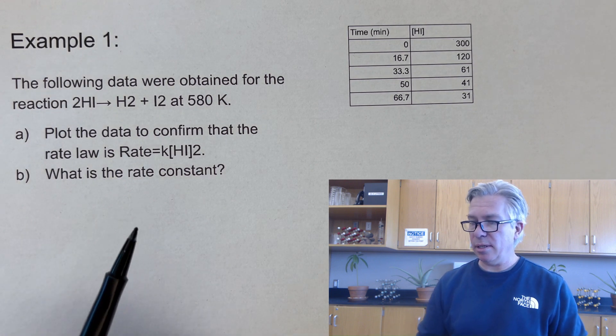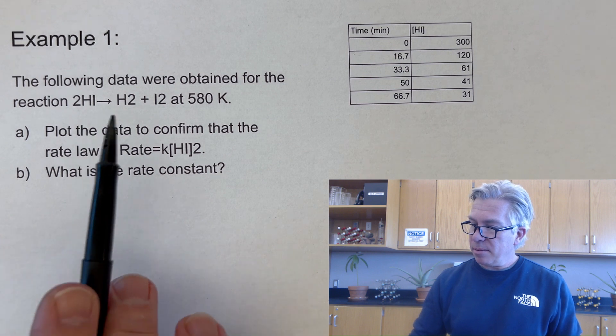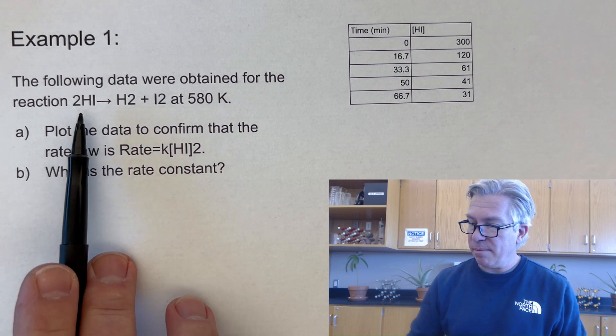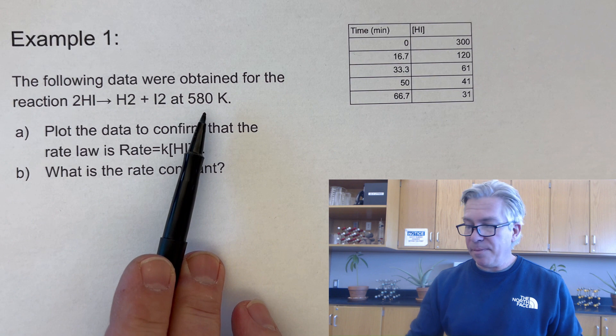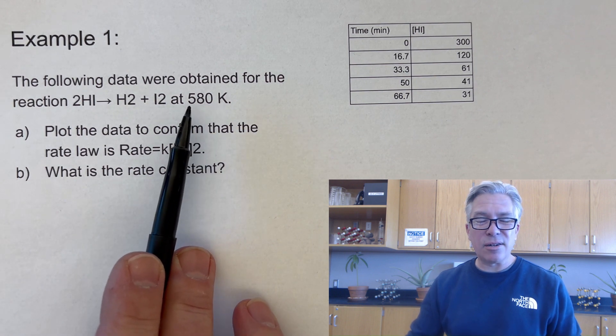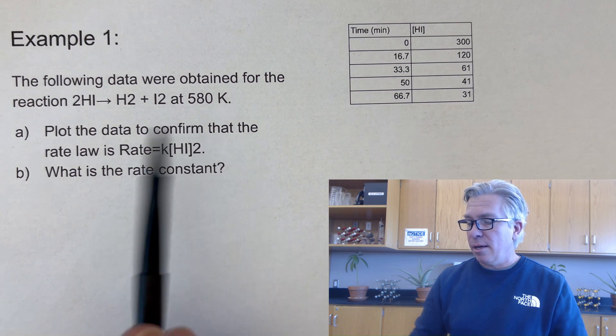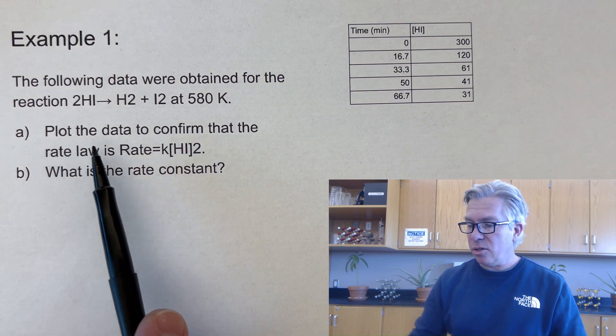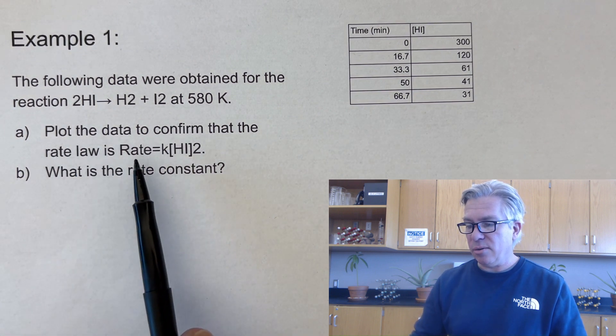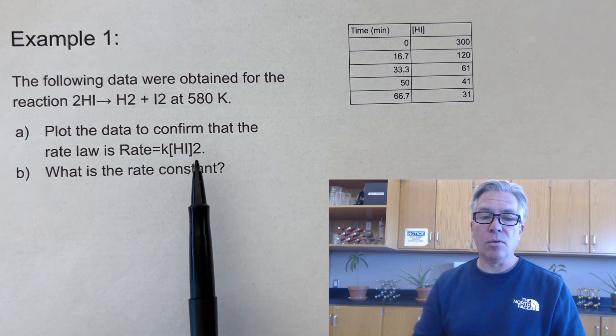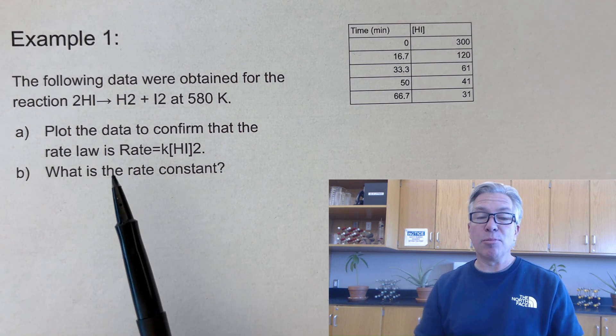Let's start with number one. The following data were obtained for the reaction of 2HI making H2 plus I2 at 580 Kelvin. That right there is unnecessary information at this point. It's nice to know, I guess. And then it says plot the data to confirm that the rate law is Rate = k[HI]^2. So they're telling us it's second order, and they're saying prove it.